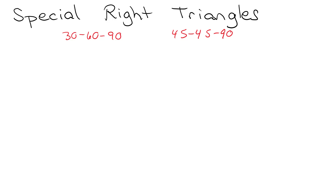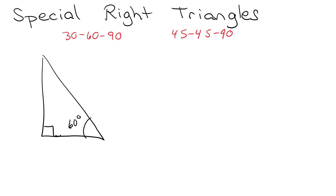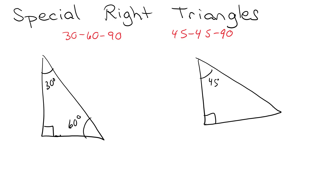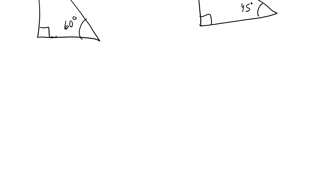In this video we're going to look at two special right triangles. We're going to look at a 30-60-90 triangle and then an isosceles 45-45-90 triangle. The sides of these triangles have very special relationships, and they come up a lot in homework, so it's good to have these memorized.